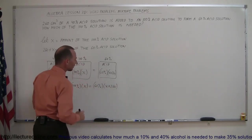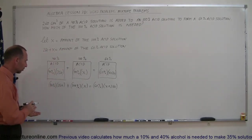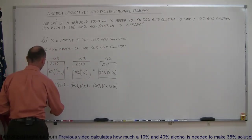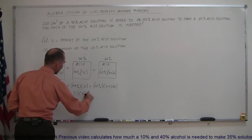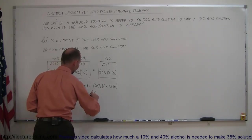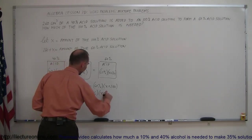To solve a problem like this, we want to convert from percentage to decimals. So 40% is 0.4 times 260, plus 100% that's simply 1 times X, equals 60% which is 0.6 times X plus 260.